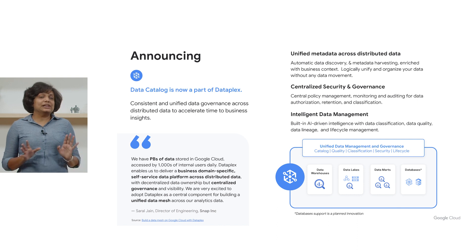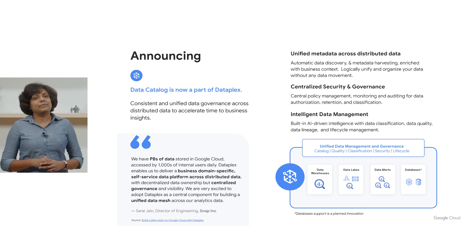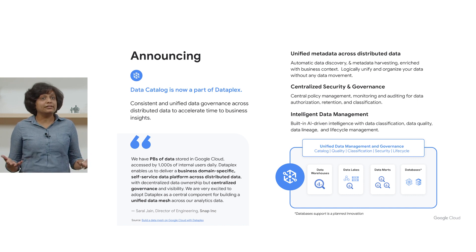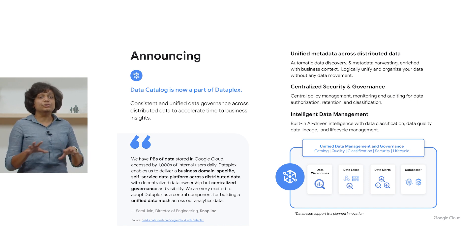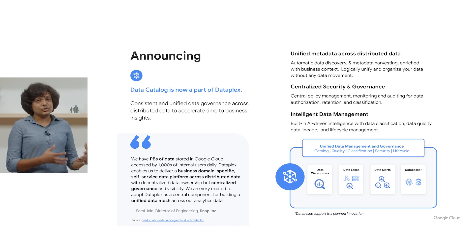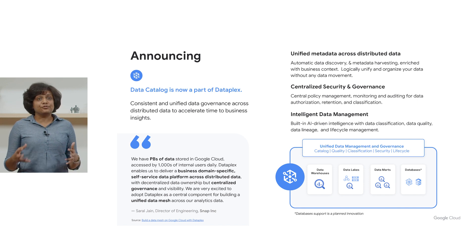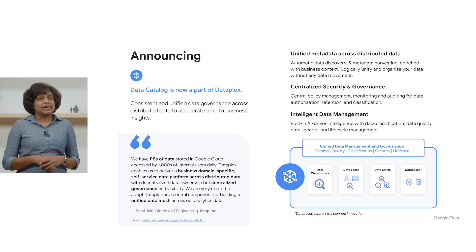Earlier this year, we announced the general availability of Dataplex, an intelligent data fabric that automates data management and governance across data to power analytics at scale. Today we are excited to announce that we are unifying Google's Data Catalog with Dataplex. With the unification, users no longer need to go to different interfaces to understand, govern, and monitor their data. They can now use Dataplex to search and discover data with relevant business context, consistently govern data with unified policy management, and leverage built-in data intelligence to make trusted data available for analytics and data science purposes.